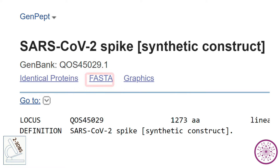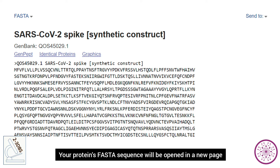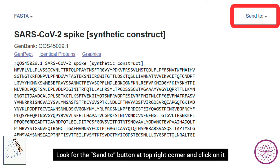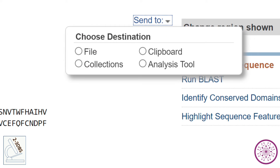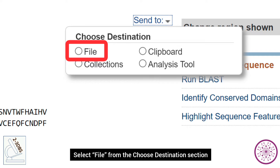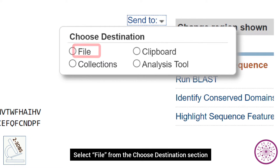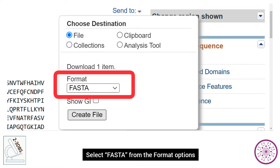Your protein's FASTA sequence will be opened in a new page. Look for the 'Send To' button at the top right corner and click on it. Select 'File' from the 'Choose Destination' section, then select 'FASTA' from the format options.